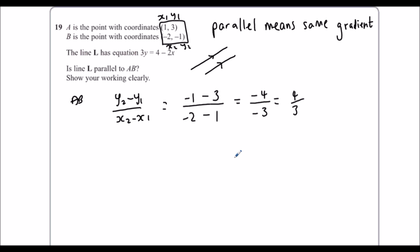Because a minus divided by minus is a plus, negative divided by negative is a positive. So it's got a gradient of 4 over 3, AB.